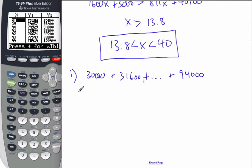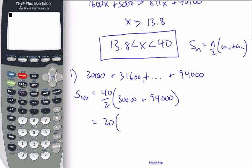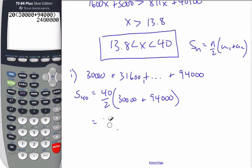So now I want to find the sum of the 40 terms. My formula for arithmetic series, here's one of them, I know it's n over 2, u1 plus u_n. So I'm going to say this is 40 over 2, u1 is 30,000, plus u_n is 94,000. Which is 20, and I'm just going to do this in my calculator, so it's 20 times 30,000 plus 94,000 in parentheses. And so Birkin makes over his 40 years career he pulls in 2,480,000. He makes almost 2.5 million.